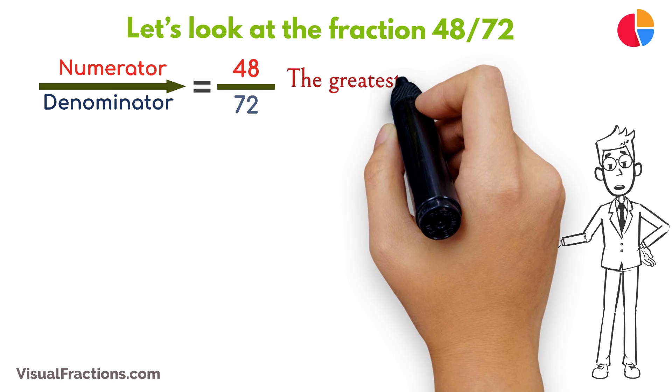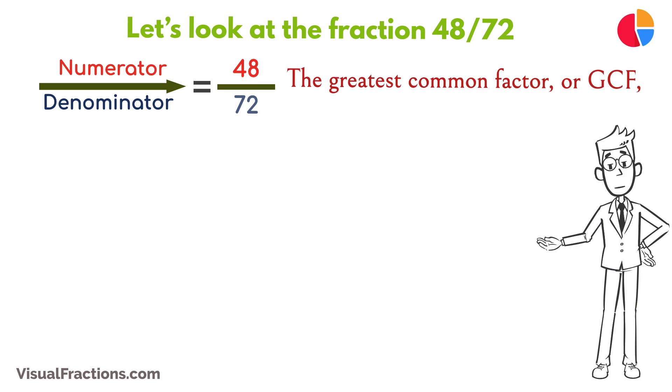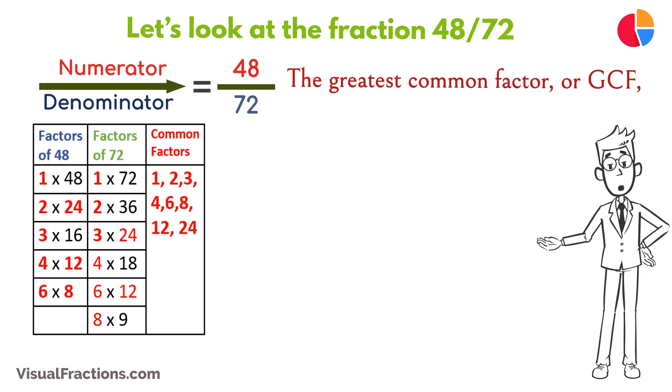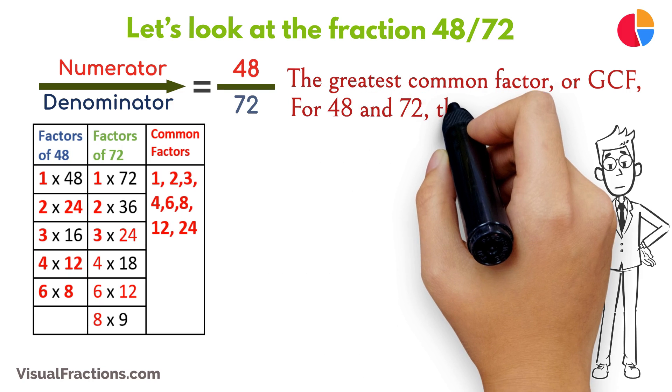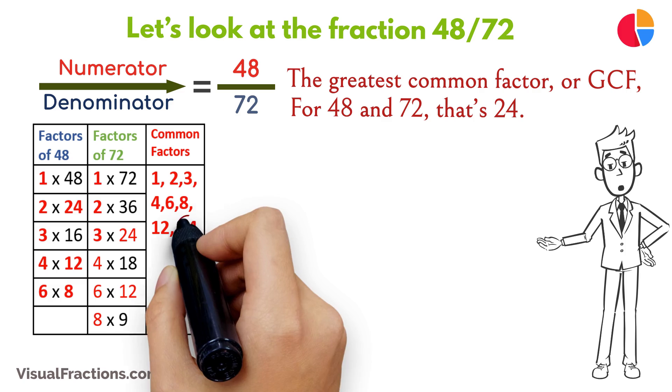The greatest common factor, or GCF, is the largest number that can evenly divide both the numerator and the denominator of a fraction without leaving a remainder. For 48 and 72, that's 24.